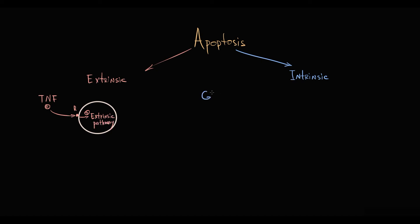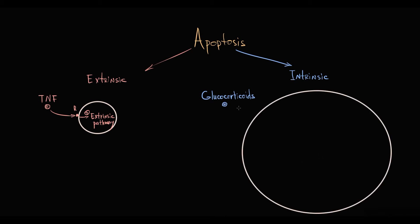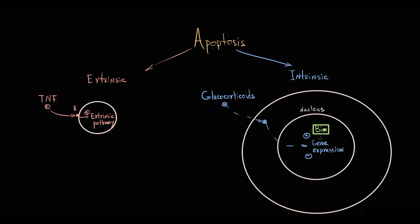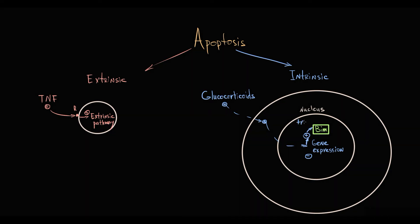Glucocorticoids are lipophilic molecules that can easily cross the cellular membrane, and in the cells they go into the nucleus where they stimulate or inhibit expression of certain genes. One of such genes in lymphocytes encodes the BIM pro-apoptotic protein. In the nucleus of the lymphocyte, glucocorticoids cause transactivation of BIM pro-apoptotic protein, and with transactivation the expression of BIM pro-apoptotic protein increases.